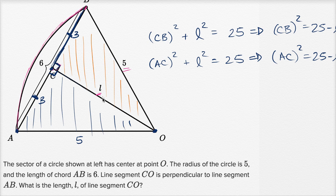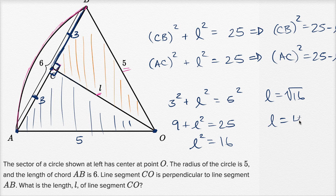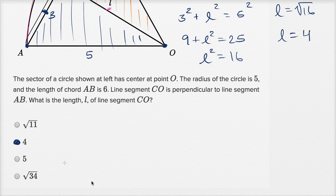But that's all you need now to actually solve for L. We can say that three squared plus L squared is equal to five squared. Or we could say nine plus L squared is equal to 25. Subtract nine from both sides. L squared is equal to 16. Take the principal root of both sides. L is equal to the square root of 16. L is going to be equal to four.